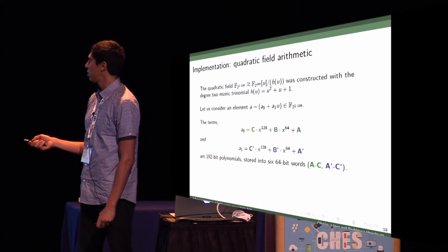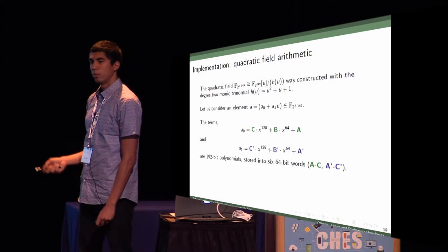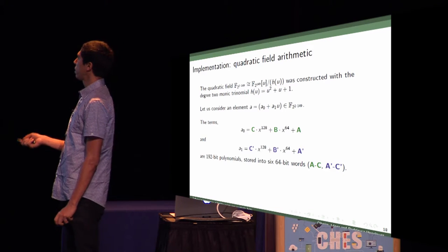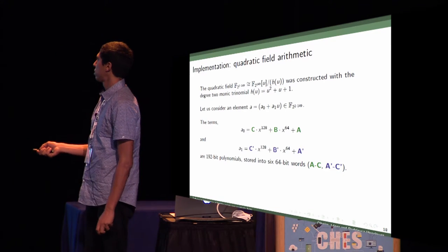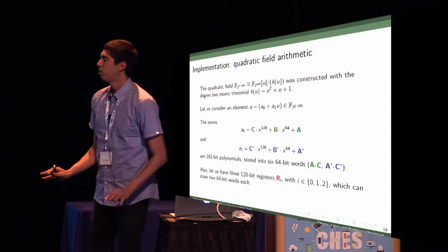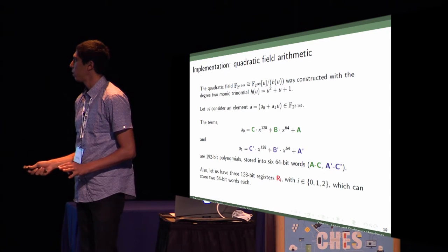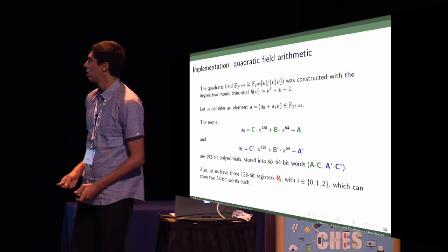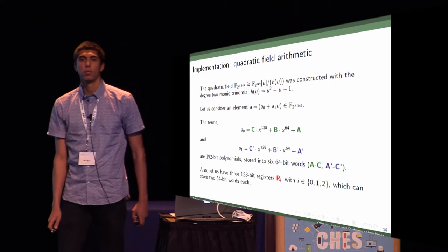These three words are 64-bit words, C, B, and A, and the other term is the linear, C', B', and A', which is stored in 64-bit words. Let's have three 128-bit registers, R0, R1, and R2, which store these 64-bit words.